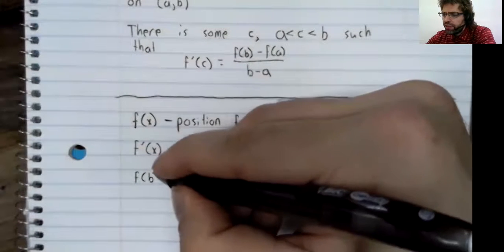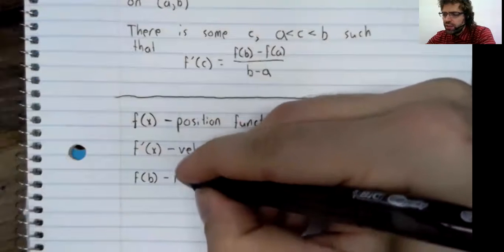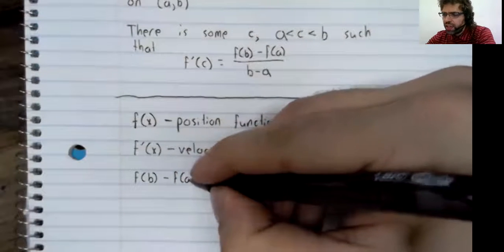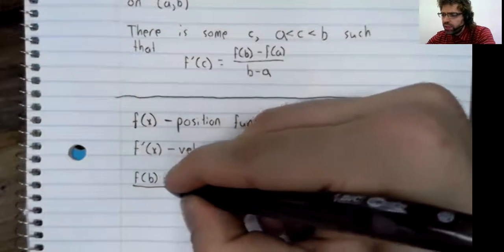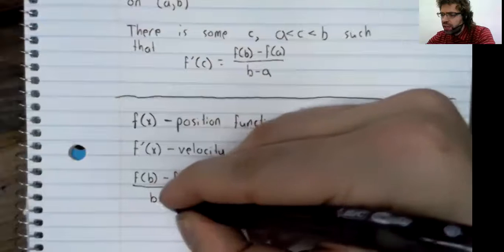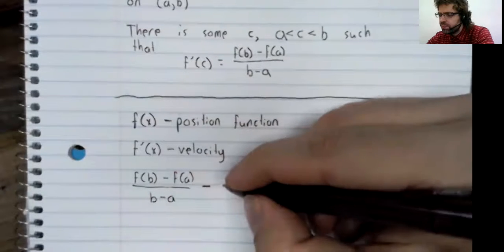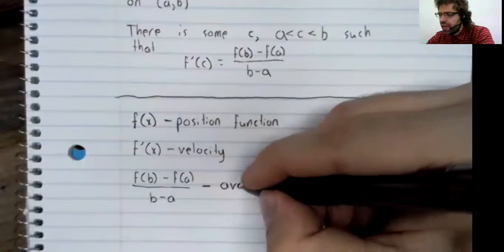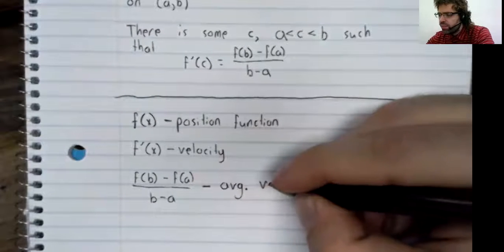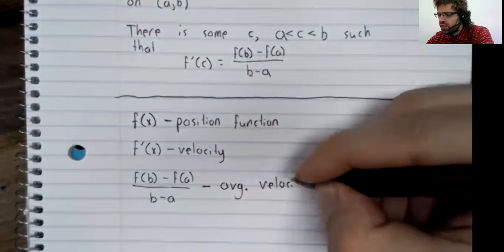And f(b) minus f(a) divided by b minus a is the average velocity on this interval.